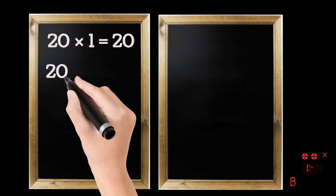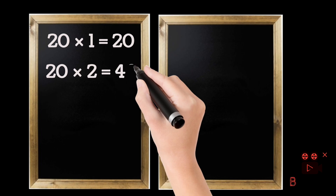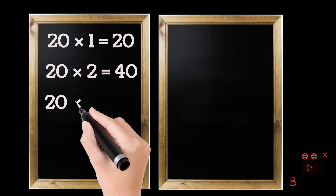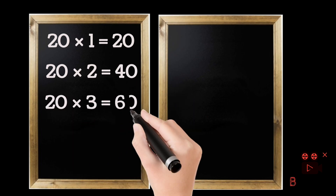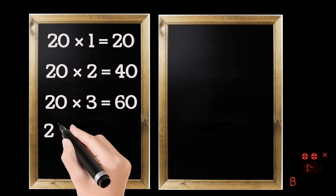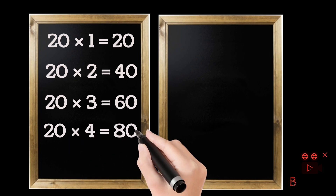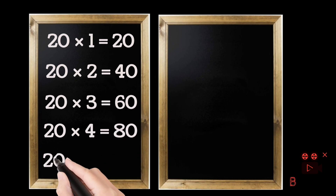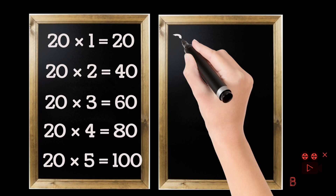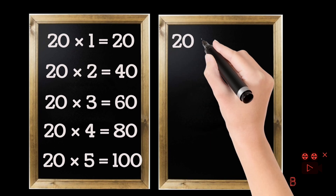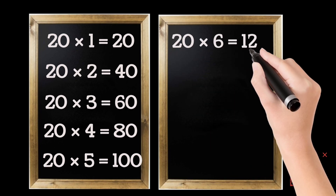20 ones are 20. 20 twos are 40. 20 threes are 60. 20 fours are 80. 20 fives are 100. 20 sixes are 120.